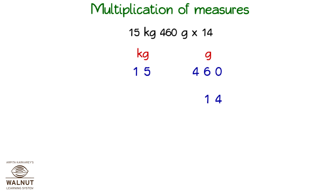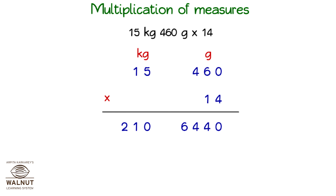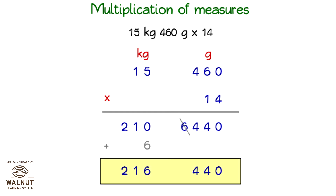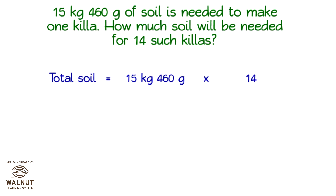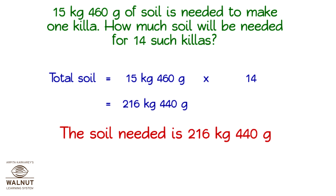We now have to multiply. We write the units, and below that we write the measures, then we get ready to multiply. Look at the unit under grams — we can see we have to adjust it. We know that 1,000 grams is equal to 1 kg. Here we have 6 kg which we club with the kg and keep the remaining grams. We add up the kilograms. Total soil = 15 kg 460 grams × 14 = 216 kg 440 grams. So, the soil needed is 216 kg 440 grams.